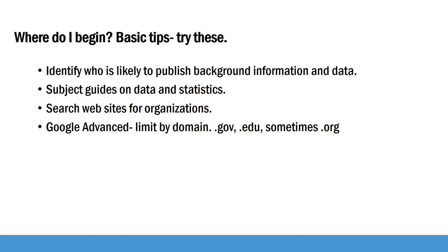Much of this information is published by federal agencies, so if you limit to just .gov, you can often find reports, data sheets, and statistics. Sometimes faculty will publish this kind of information on university websites, so .edu can be useful. And sometimes you can find organizational data at .org, though you have to be careful because some organizations have a bias or an agenda.